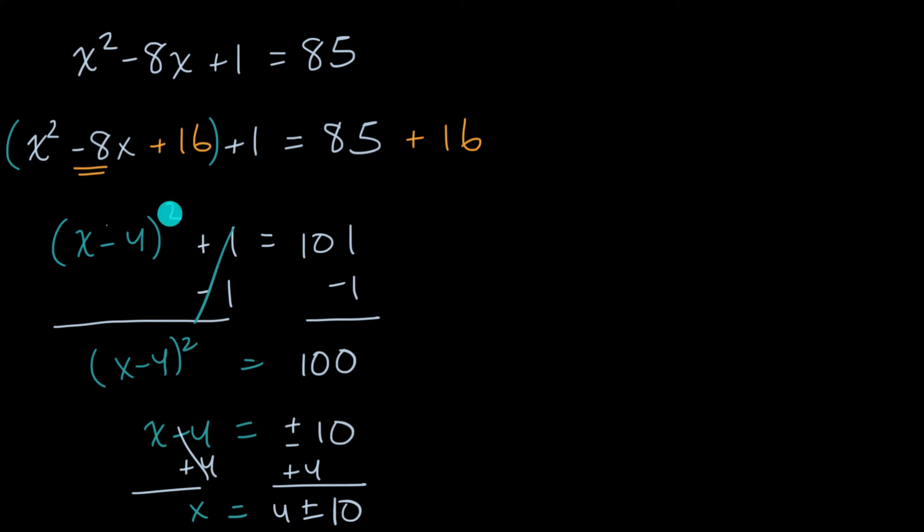And then what do I get? I get x is equal to four plus or minus 10. Or another way of thinking about it, I could write it as x is equal to four plus 10 is 14, and then four minus 10 is equal to negative six. So these are two ways to solve it. But there's other ways to solve this equation.